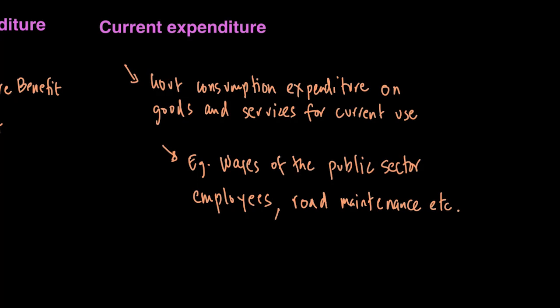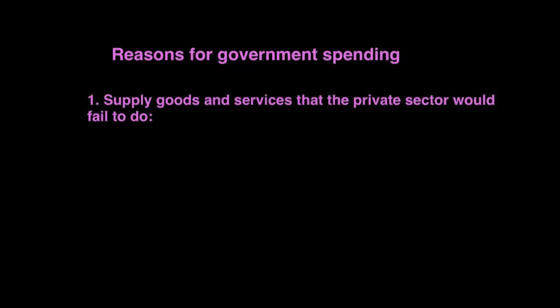Now let's look at reasons for government spending. Government spends money for many different reasons, including to supply goods and services that the private sector would fail to do, such as public goods like defense or merit goods such as hospitals and schools, and welfare payments and benefits such as unemployment benefits and disability benefits.